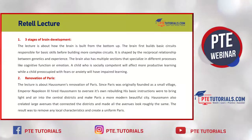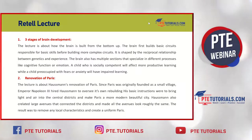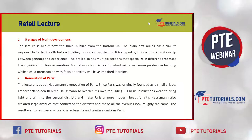In 1853, Haussmann began renovating France's capital city. His basic instructions were to bring light and air into the central districts, improve sanitation and living areas, and make Paris a more modern, beautiful city. His projects included destruction of old medieval neighborhoods, widening of streets, building large parks and public squares, and addition of fountains and sewer lines. The size of Paris was doubled by annexing nearby suburbs. One main priority was to connect all districts together. Haussmann created large avenues connecting the districts and made all avenues look roughly the same — buildings required to be the same height, style, and even use the same cream-colored stone for the facade.